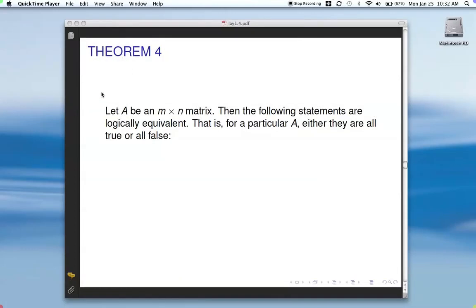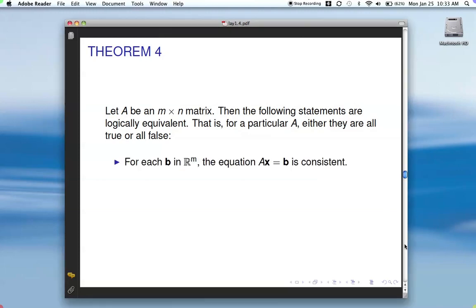I want to start back here with Theorem 4. This is a very important theorem in your book, so you want to pay close attention to this one. So it says, let A be an M by N matrix, then the following statements are logically equivalent. That means, for a particular matrix A, either they are all true or they are all false. So that's a powerful theorem that we have here.